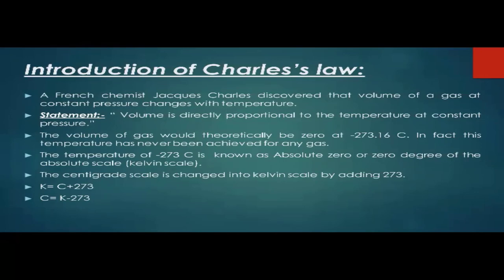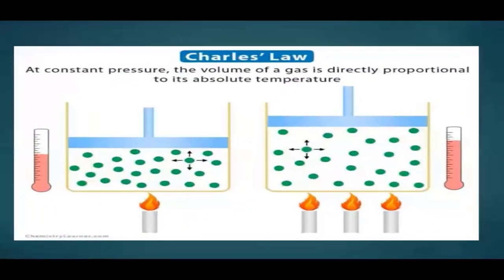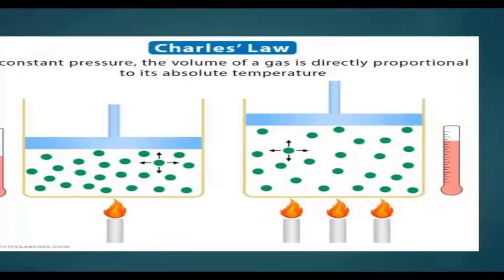At constant pressure, the volume of a gas is directly proportional to its absolute temperature. If we look at the first container, when the temperature is low, the volume is low. In the second container, when the temperature increases, the volume has also increased.